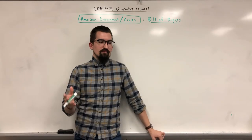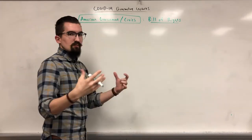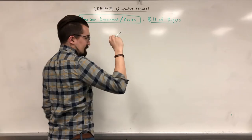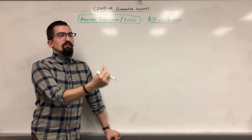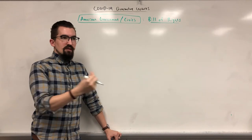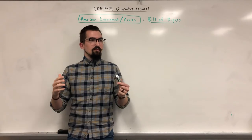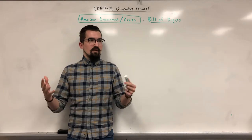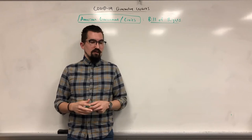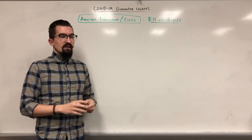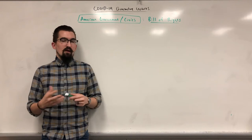I briefly covered the Bill of Rights in the previous video as part of the ratification debate, but I want to add a couple of details that might help understand how it was actually made. These were amendments added as part of an arrangement where Federalists essentially agreed to — or at least realized the significance of — applying some changes to the Constitution in order to appease states with larger anti-Federalist populations, like Massachusetts and New York.